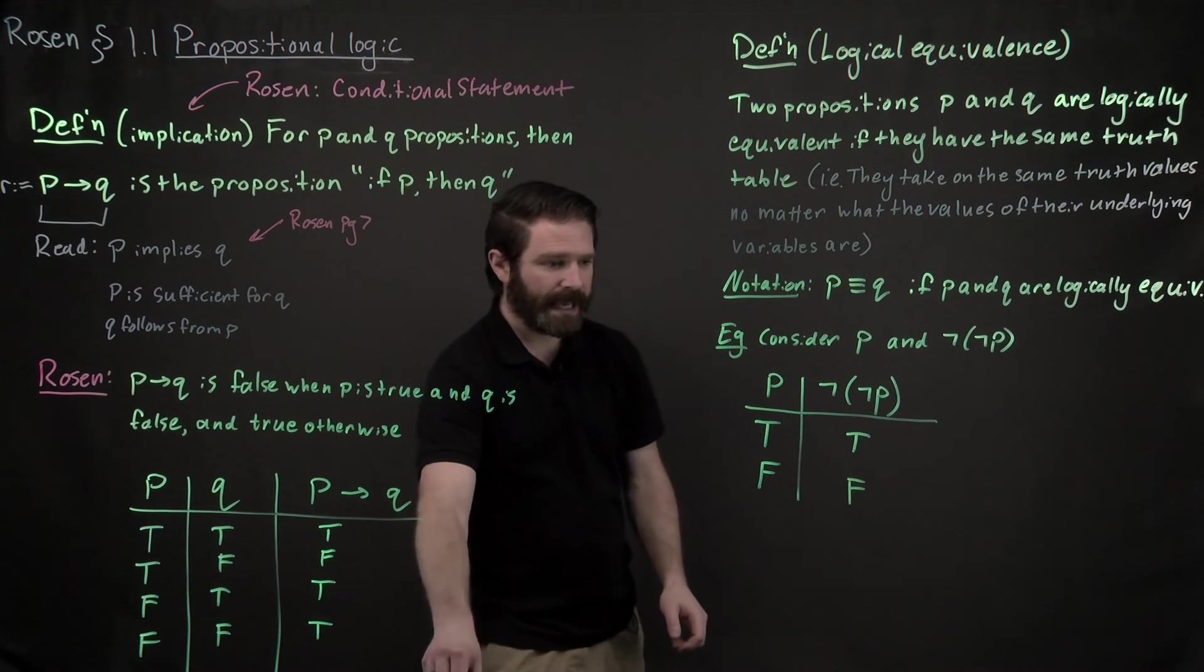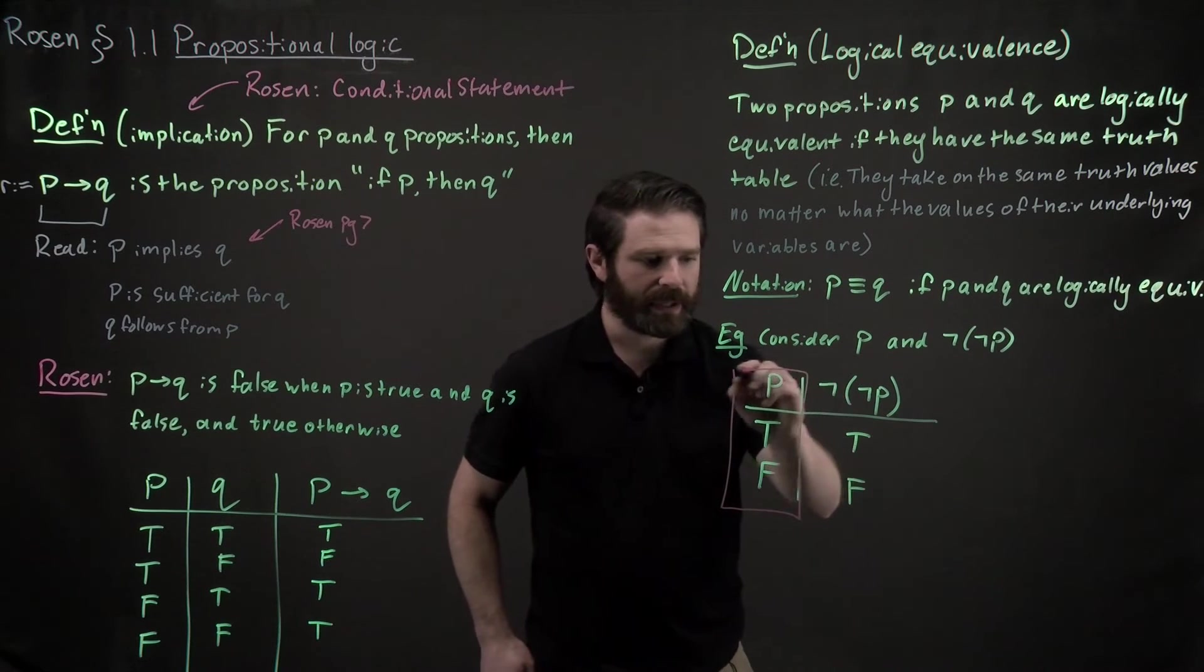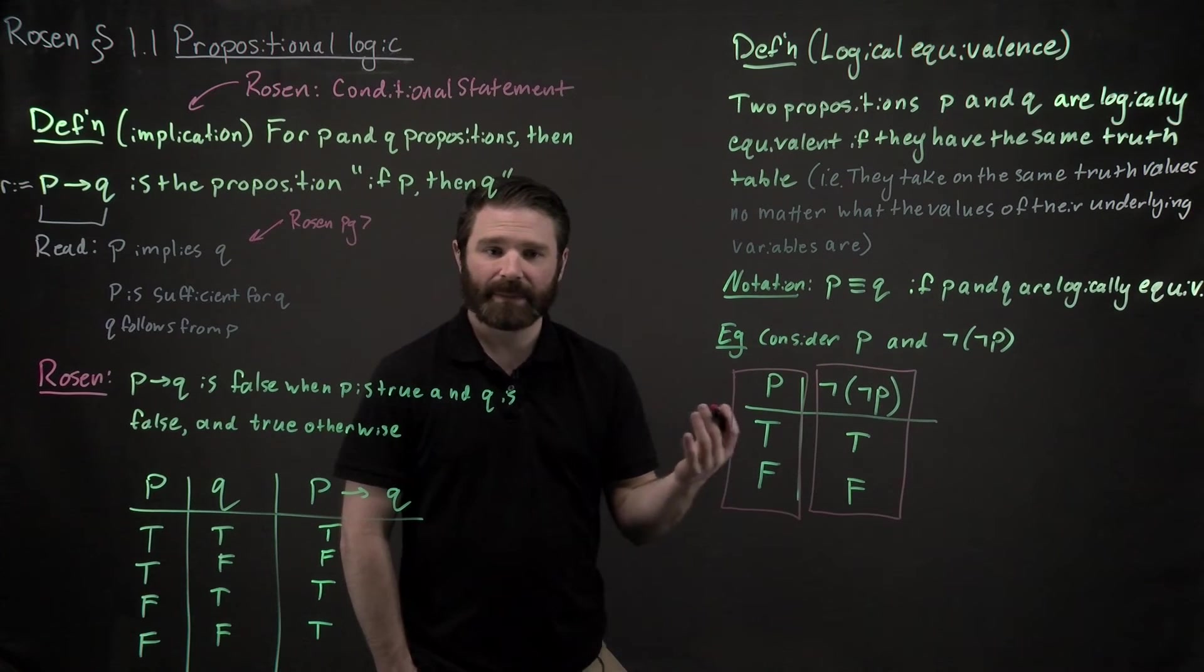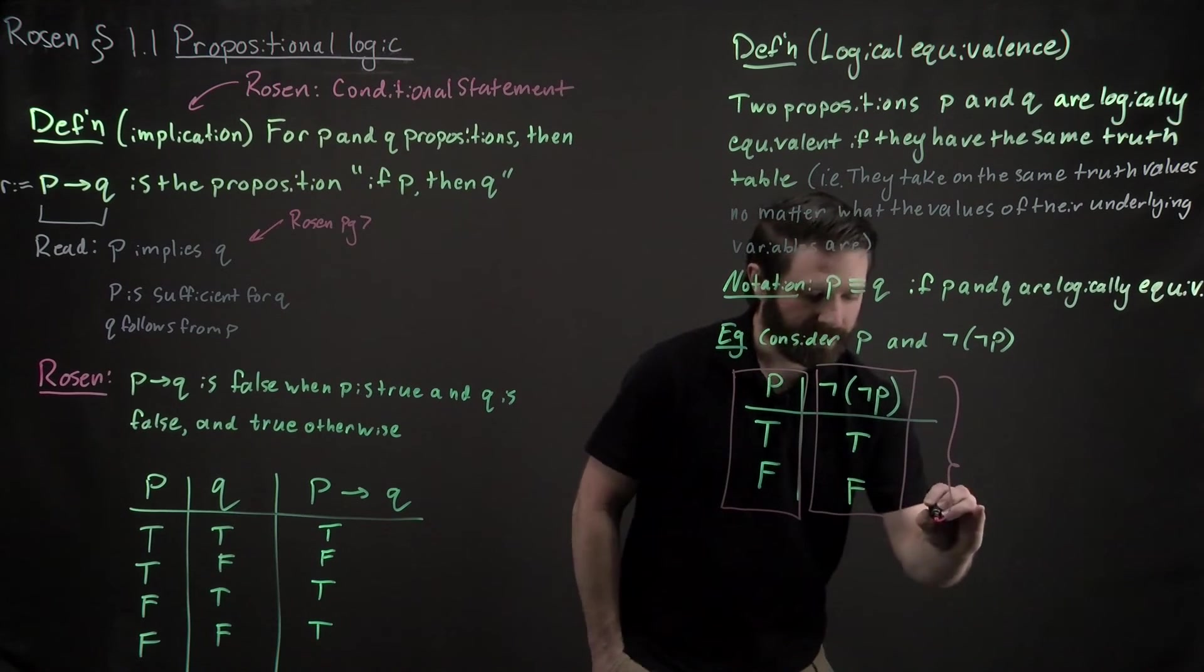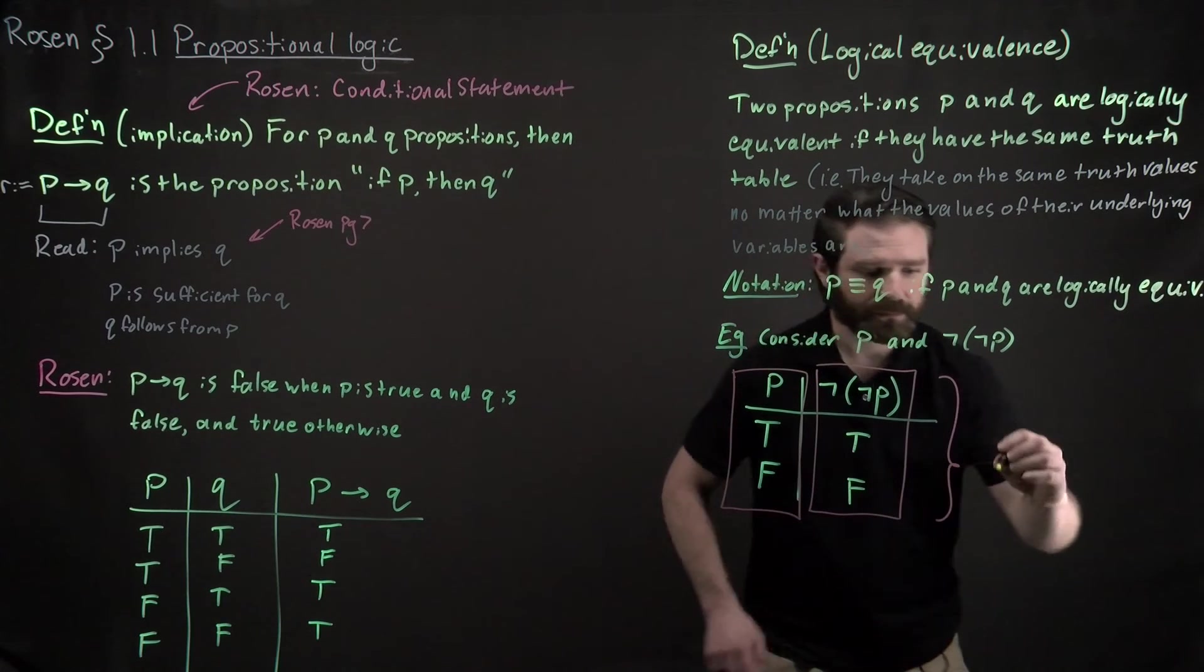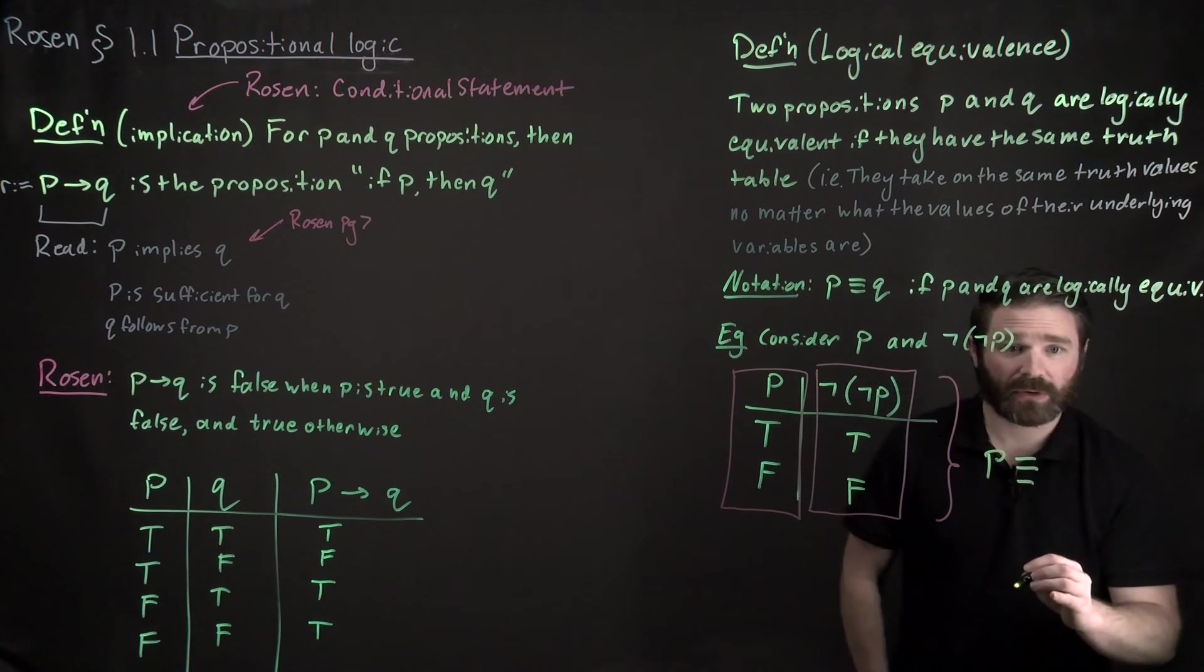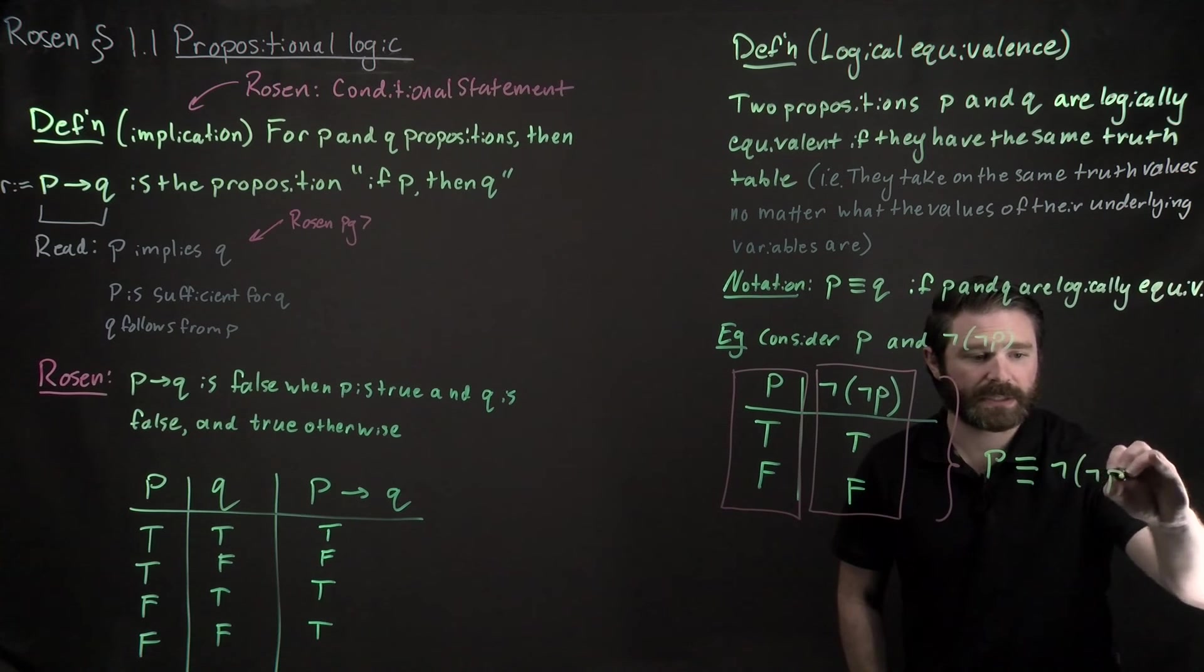And hey, look at that. We have this right here and this right here. They have the exact same truth table. And therefore we would say from this that P is logically equivalent to not, not P.